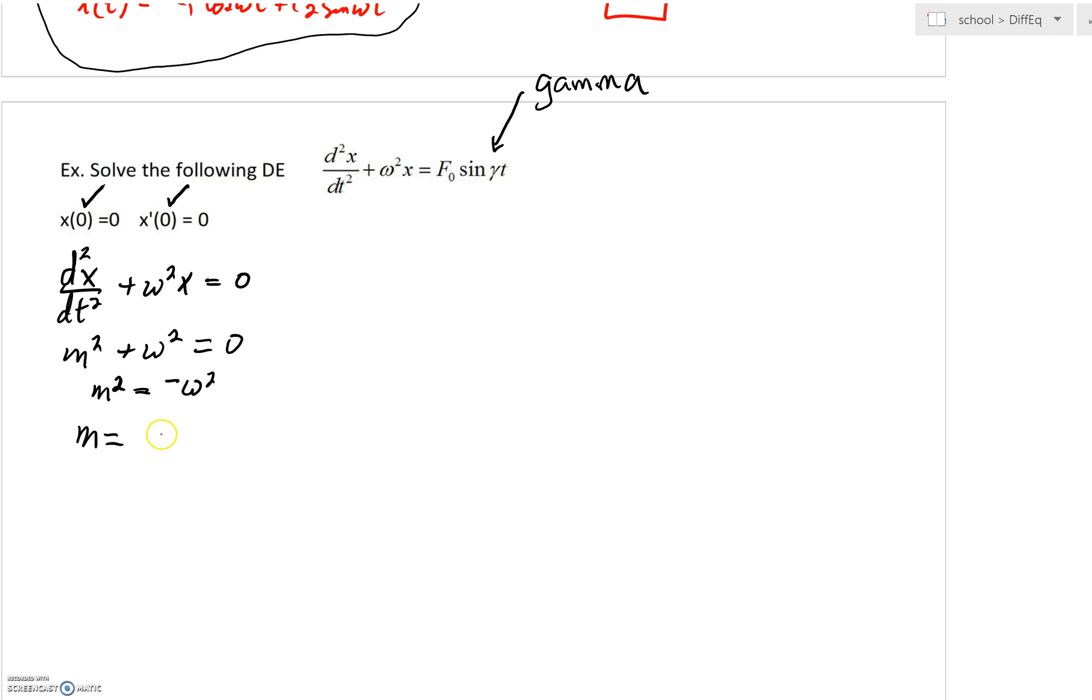So m, if we took square roots, would be plus or minus iω, and we'd have a zero here. What's that implying? It's implying that the characteristic solution would be c₁cos(ωt) plus c₂sin(ωt).